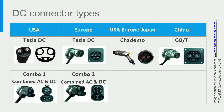In terms of DC charging, the CHAdeMO Type 4 connector is used by Japanese car manufacturers globally, while American and European car manufacturers have adopted a combined AC-DC connector called the Combined Charging System, or CCS combo. Interestingly, Tesla uses the same connector meant for AC charging for DC charging as well. In the case of China, they have their own DC connector.